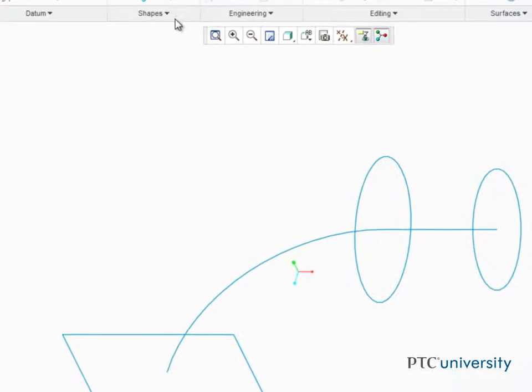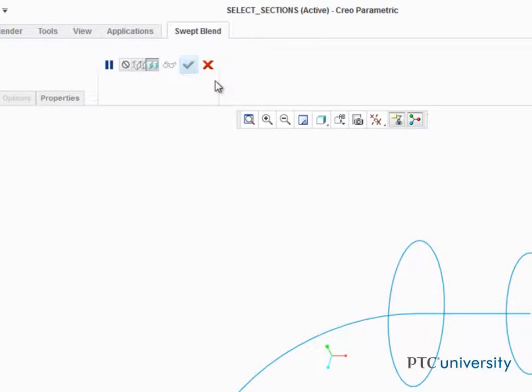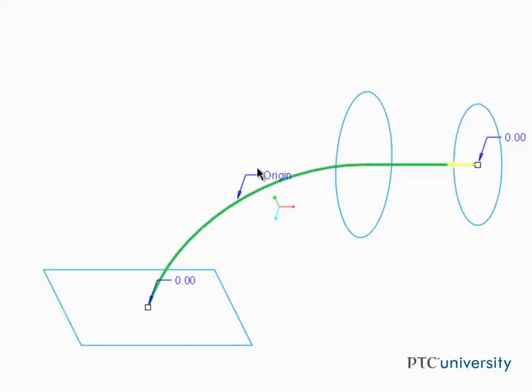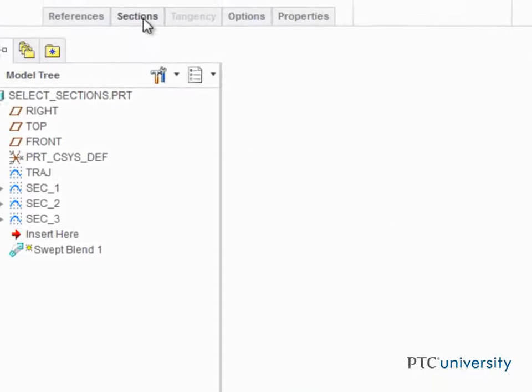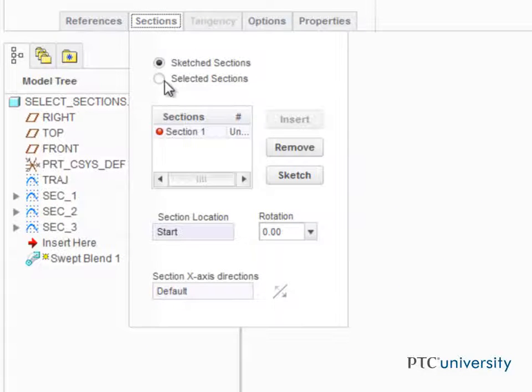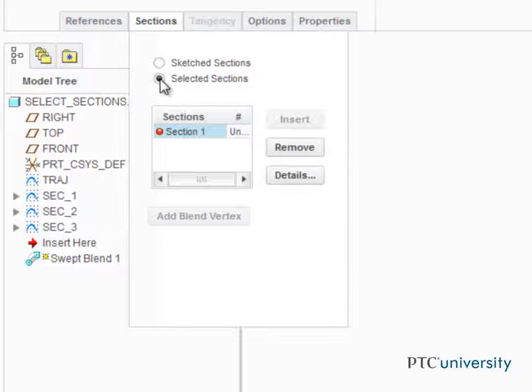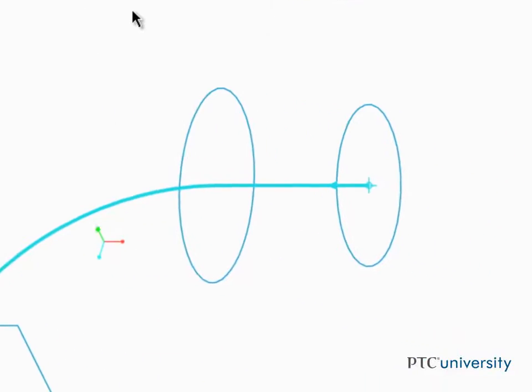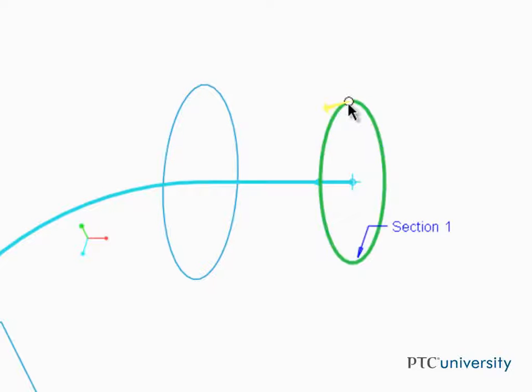Start the swept blend tool from the shapes group and then select the trajectory. Open the sections tab from the dashboard and enable the selected sections option. We're going to sweep right to left here, so we'll select this rightmost circle first as section 1.